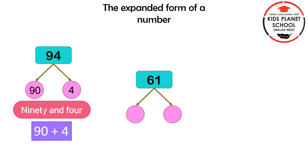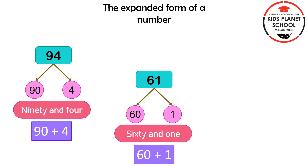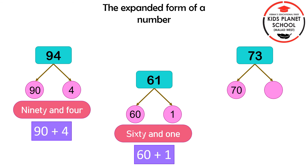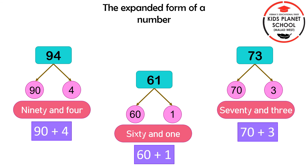Next, 61. In the number 61, the place value of 6 is 60 and the place value of 1 is 1. Therefore, 60 and 1 makes 61, and the expanded form of 61 is 60 plus 1. Next, 73. In the number 73, the place value of 7 is 70 and the place value of 3 is 3. Therefore, 70 and 3 makes 73, and the expanded form of 73 is 70 plus 3. So children, this was all about your topic — place value and expanded form.